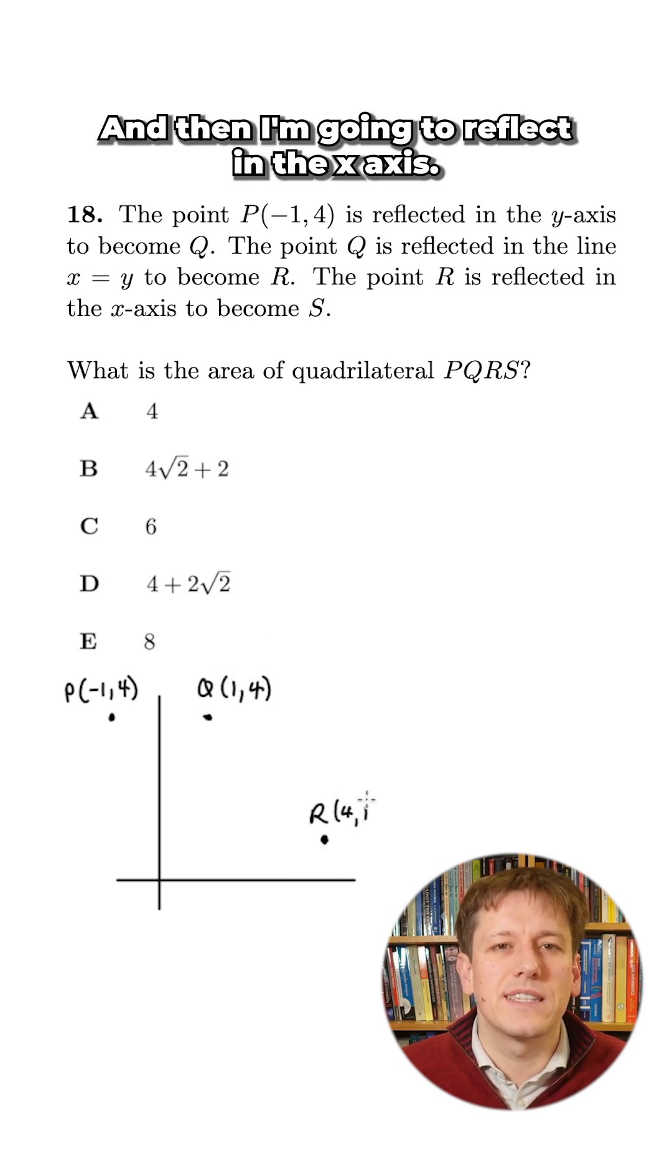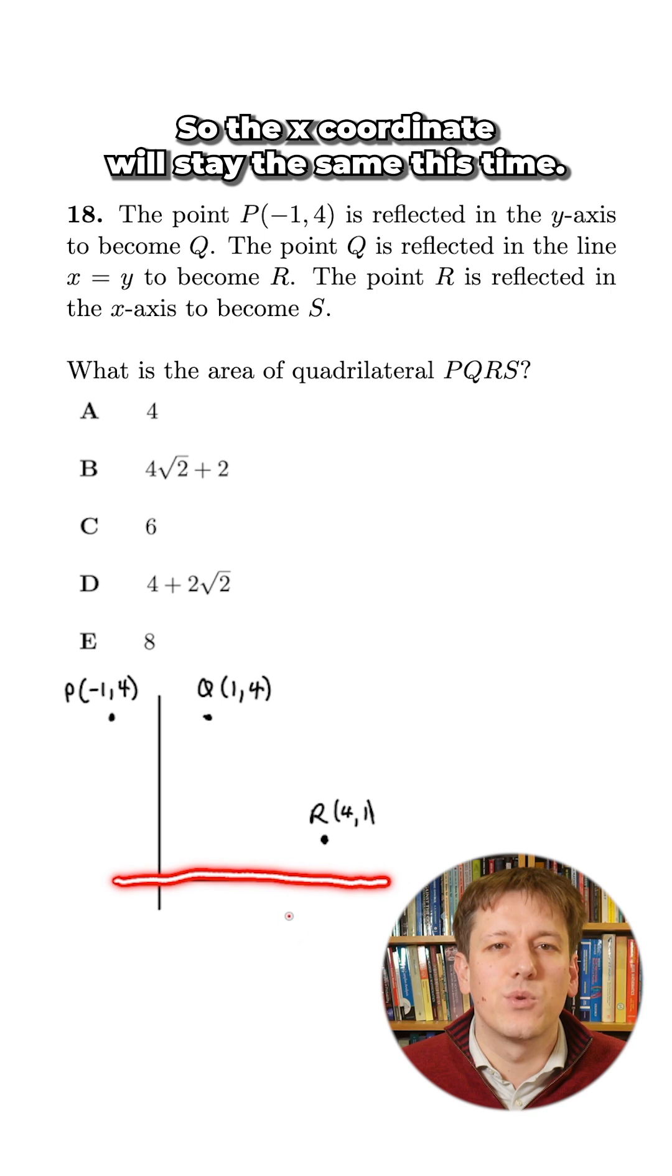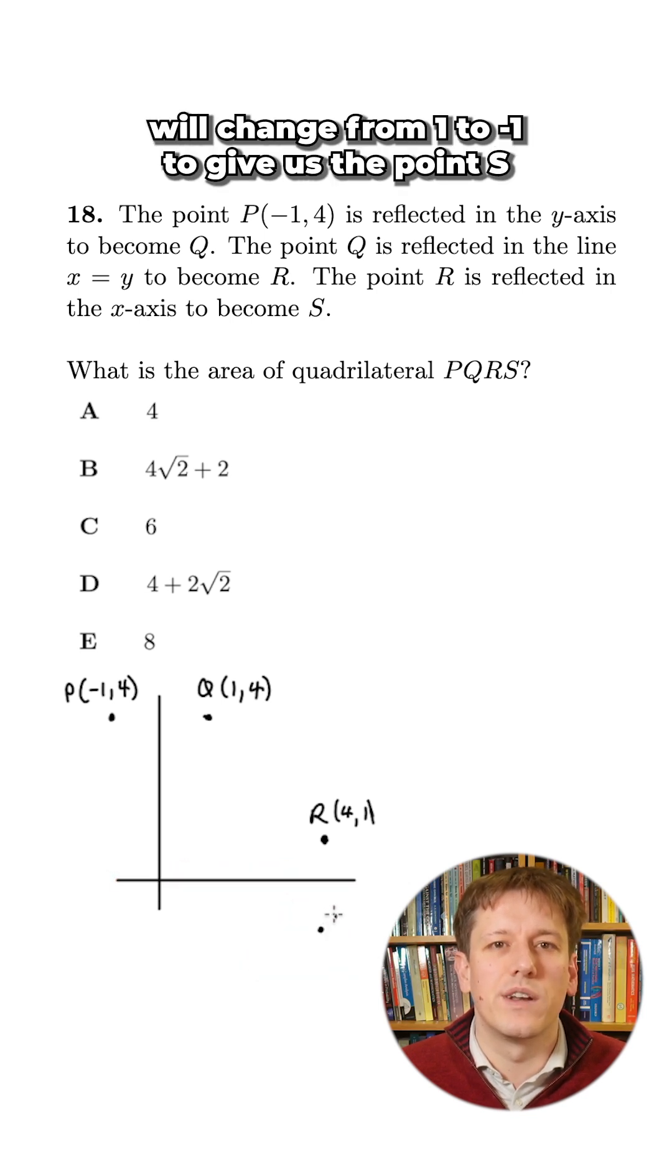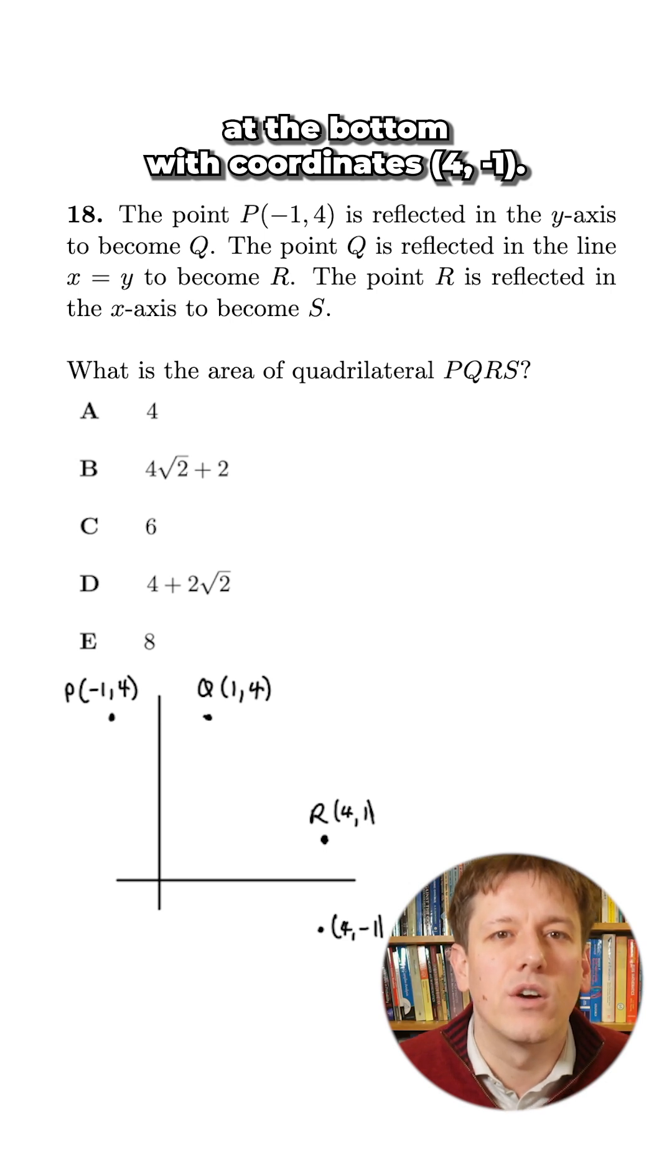And then I'm going to reflect in the x-axis so the x-coordinate will stay the same this time and the y-coordinate will change from 1 to minus 1 to give us the point S at the bottom with coordinates 4, minus 1.